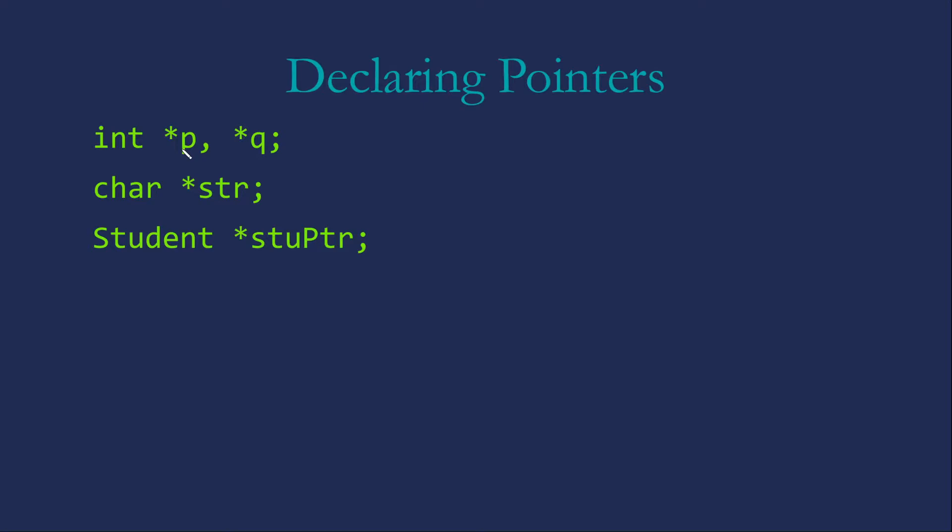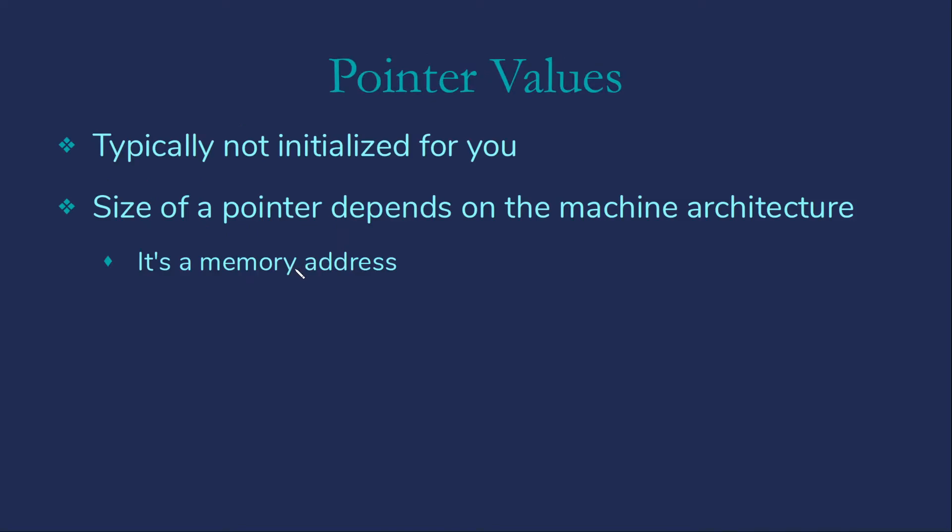However, despite that, the asterisk is considered to be part of the type name, not part of the variable name. Pointer values are typically not going to be initialized for you. The size of the pointer is going to be very dependent on the machine architecture, because this is a memory address. If you're in a 32-bit architecture, your pointers are going to be 4 bytes or 32 bits. If you're in a 64-bit architecture, your pointers are typically going to be 8 bytes or 64 bits. In many cases, longs and pointers will have the same size, but you want to make sure that's true before depending on it.